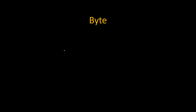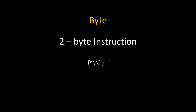How many bytes is this instruction? It is a two-byte instruction. For example, if the instruction is MVI C, 35H, then MVI C takes the first byte and 35H takes the second byte, making it a total of two bytes. A shortcut way to remember: if a two-digit number is written in the instruction, then it is a two-byte instruction. If no number is given — like HLT — then it is a one-byte instruction.